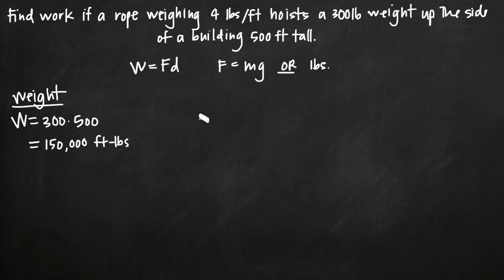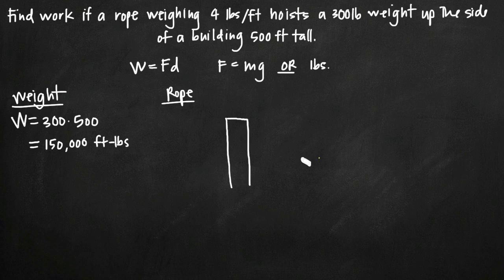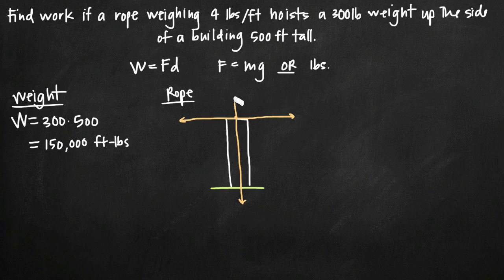Now we need to do the work on the rope, which is more complicated. We have a rope hanging vertically down the side of the building, and it takes a different amount of work to lift each section. If we draw the building and the ground, we can place the origin at the top of the building and draw axes going down. We'll call the vertical axis the x-axis so we can do the entire problem in terms of x.